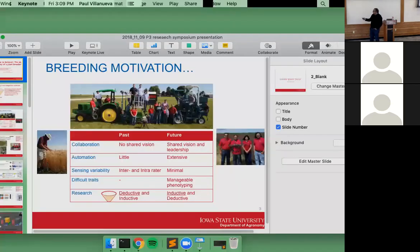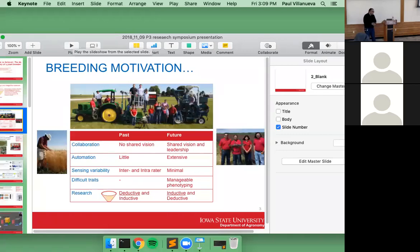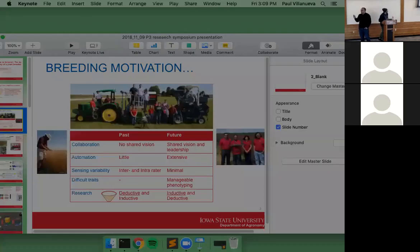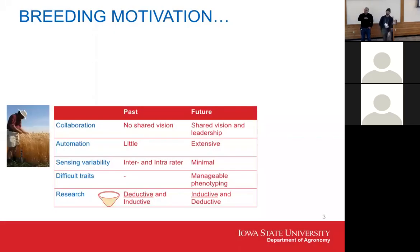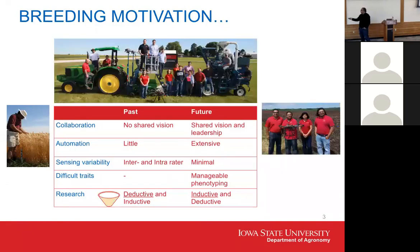The next aspect I thought about five years ago — that needed to be addressed in the future — is automation. We had very little automation in the past. In the plant breeding pipeline, we're talking about hundreds of thousands, sometimes millions of data points. At that scale, automation is just necessary — it's not a nice-to-have; it's something that is really needed.